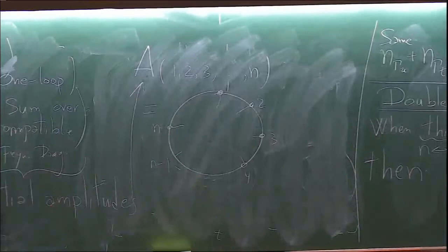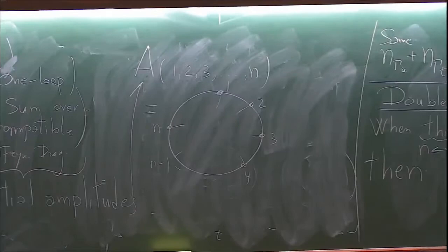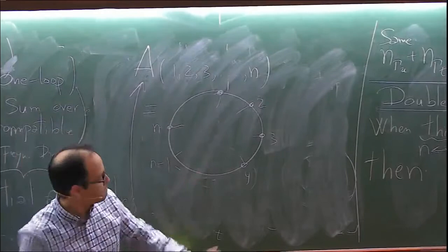These compatible Feynman diagrams are those which can be embedded on a disk so that the external legs are attached to the boundary following the specified ordering — in other words, they can be planarly embedded on the disk. After extracting all color via the traces, the partial amplitudes are purely kinematic objects.